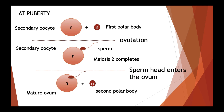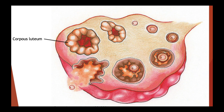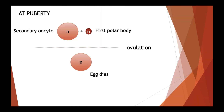Fertilization occurs by the fusion of the haploid nuclei of the sperm and the haploid ovum. The ruptured follicle left behind after ovulation develops into a corpus luteum. If the egg is not fertilized and implantation does not occur, the corpus luteum degenerates to form a scar of fibrous tissue called corpus albicans and the egg dies. Then a new follicle matures during the next cycle and the cycle continues.